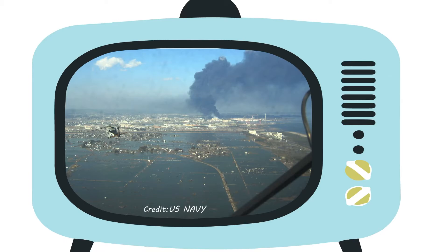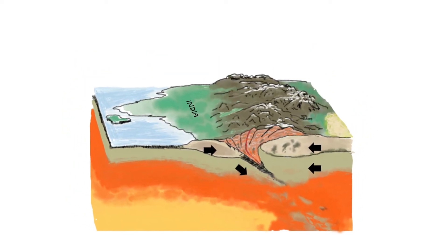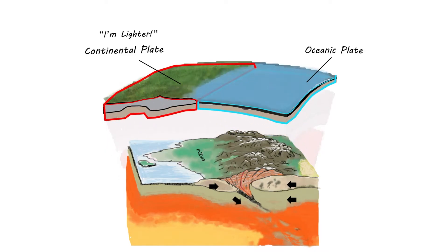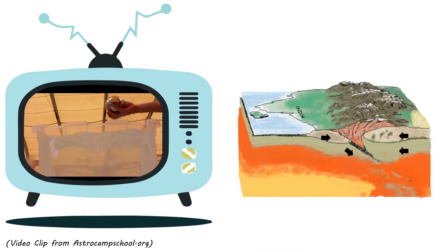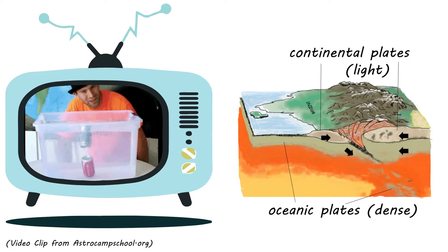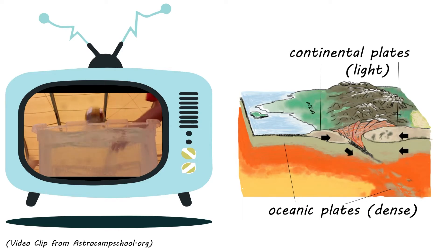The second type of convergent boundary is when two continental plates meet, causing a continental collision. Remember, the continental plates are lighter and thicker, so it is really hard for continental plates to sink into the mantle. Have you ever tried to push a ball underwater? The ball will rise to the surface and float because it is filled with air, which is less dense than water. Just like the ball in the swimming pool, the lower-density continental plates are not easy to subduct into the mantle.